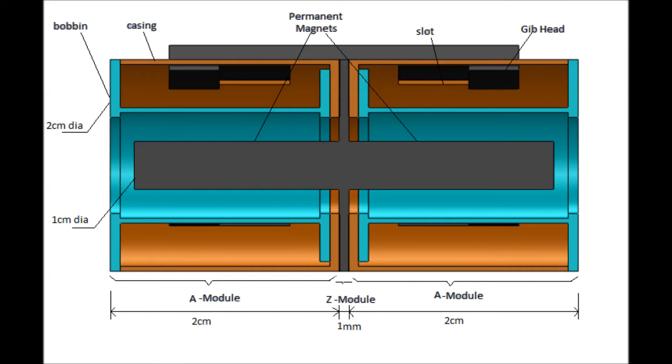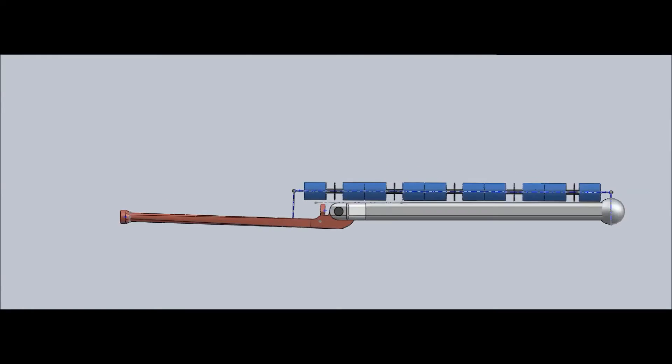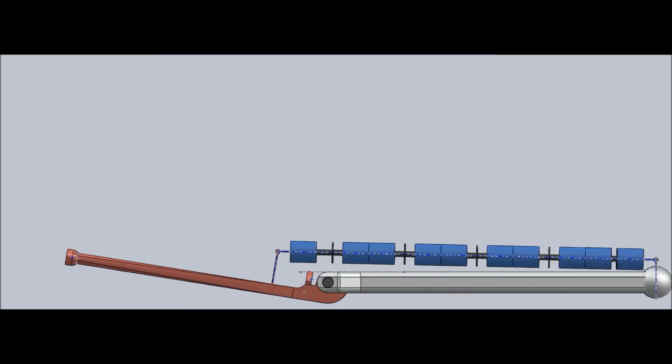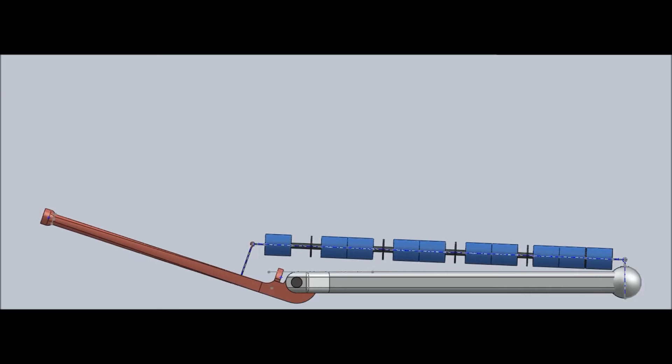Each artificial sarcomere has three parts: two alpha modules and one zeta module. The artificial muscle works like this - with the contraction of each sarcomere unit, the tendon pulls the link over by a little angle for flexion.